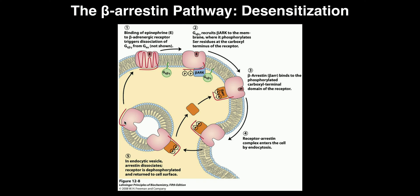Consider the receptor that's been pulled inside the cell in the vesicle. If epinephrine is outside, can it bind to that receptor? No, it can't — epinephrine must bind to the G protein-coupled receptor when it's in the membrane, but it's no longer in the plasma membrane; it's been pulled inside the cell. So there's no way epinephrine can bind to this protein now that it's been endocytosed. That prevents epinephrine from exerting its action, and that process is called desensitization.